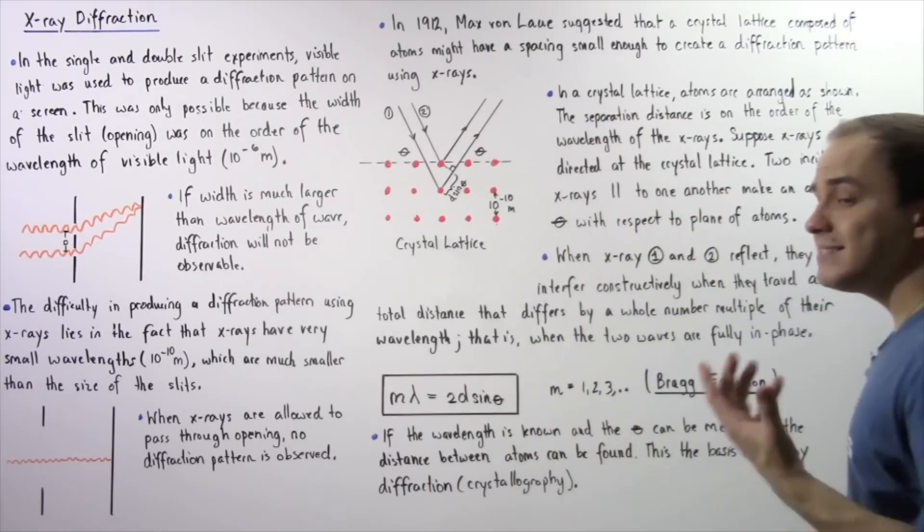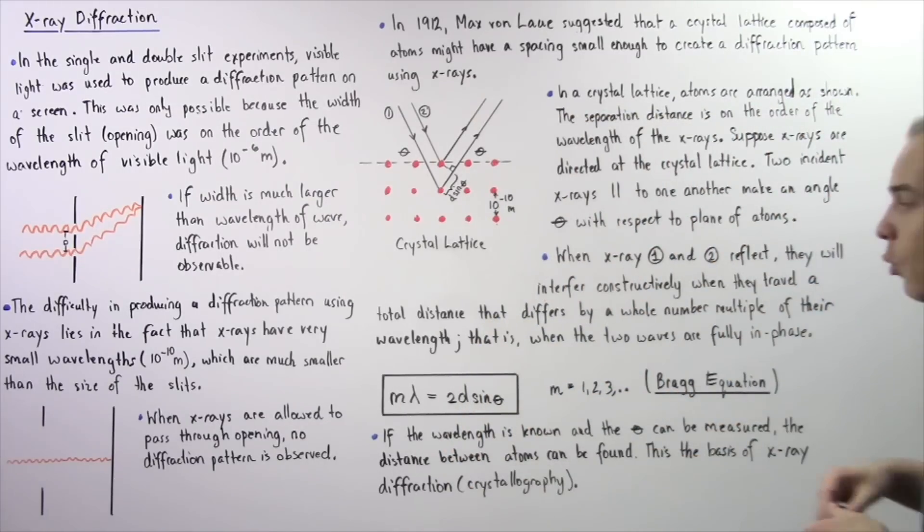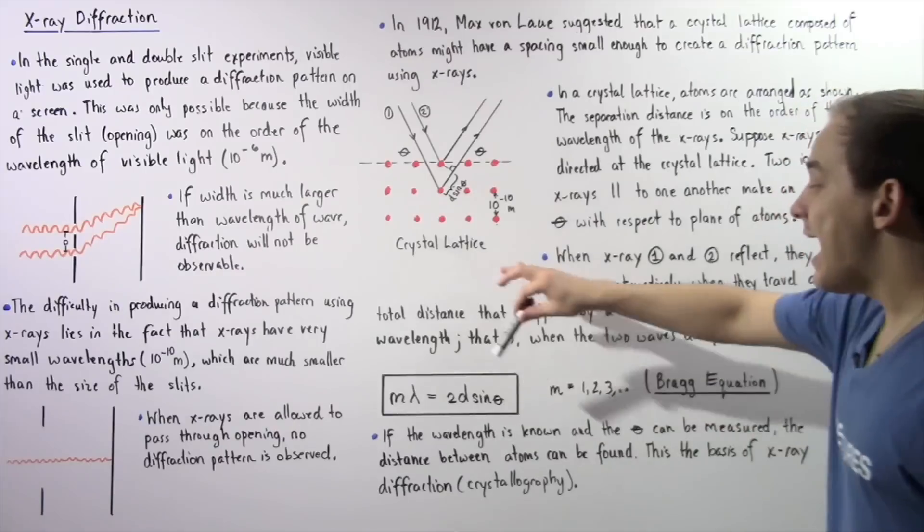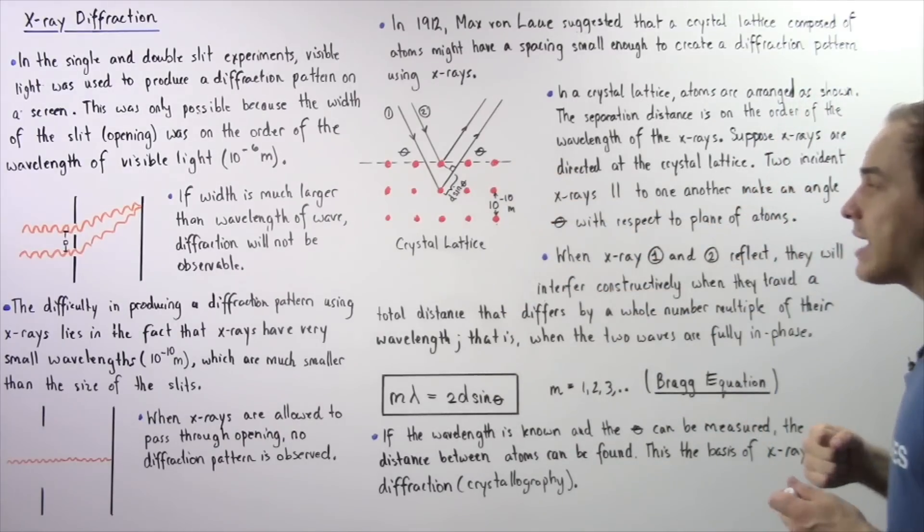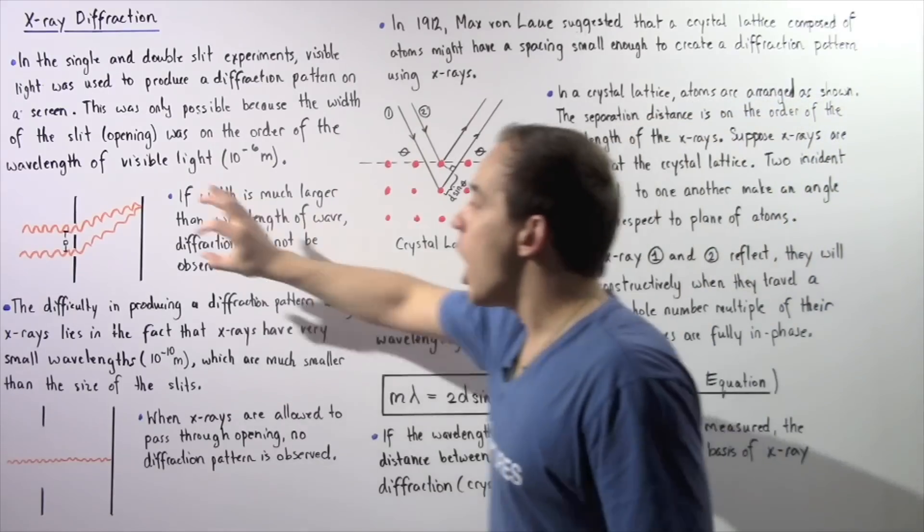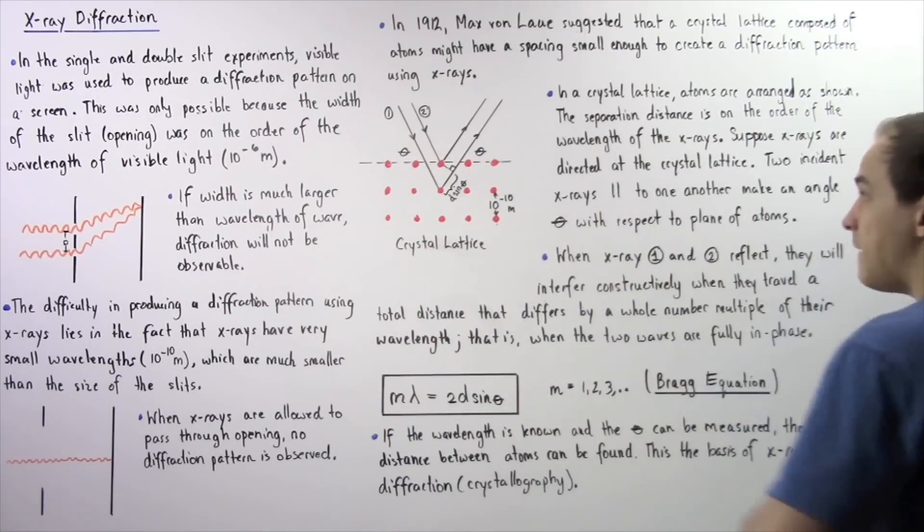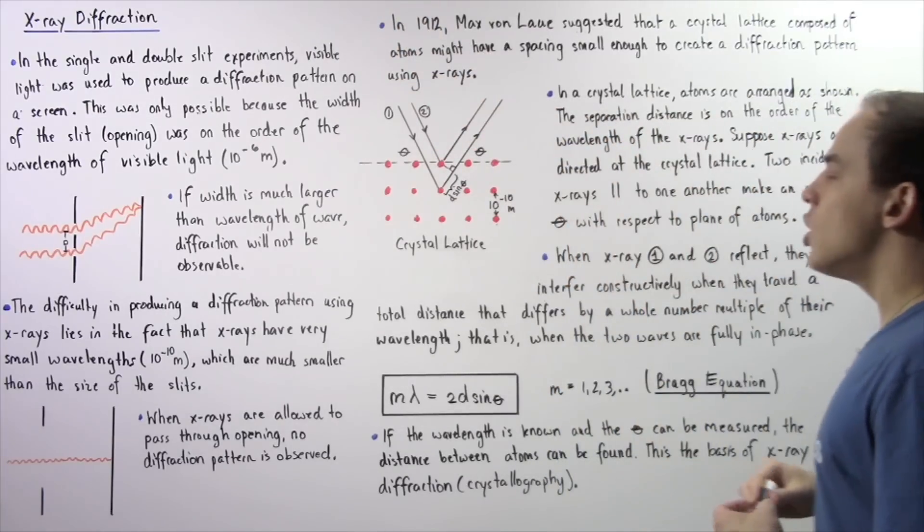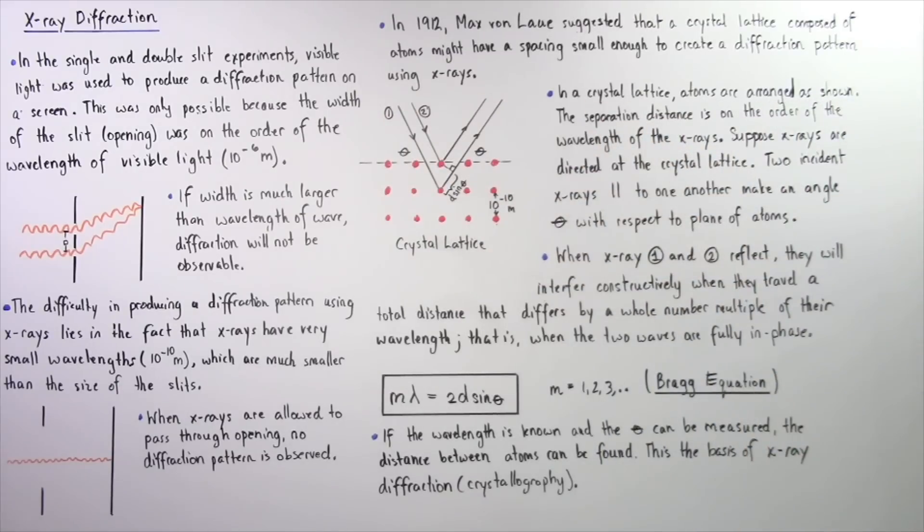M is simply a positive integer. It could be 1, 2, 3, 4, and so on. Lambda is the wavelength of that X-ray, and D is our separation distance between our two atoms. It's basically the size of our slit, the size of our opening. The angle theta is the angle that the incident X-ray makes with respect to the plane of this crystal lattice.